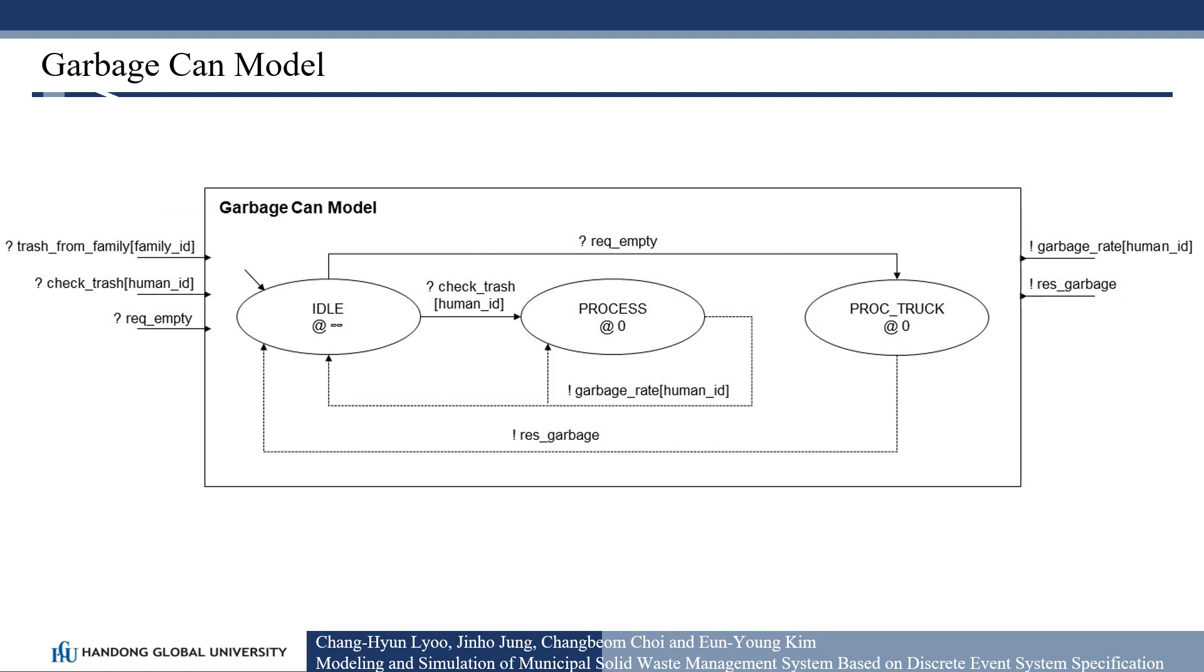Garbage can model models the temporary garbage collection area for each building. If residents generate a large amount of garbage in the garbage can or a garbage truck does not collect sufficient garbage from the garbage can, some garbage may remain in the can. The remaining garbage may affect the satisfaction level of a resident.